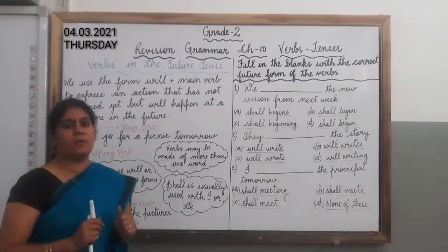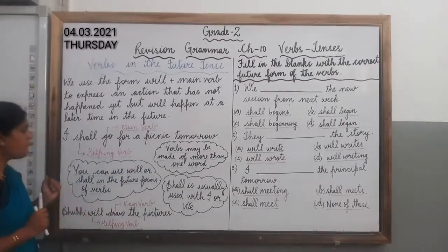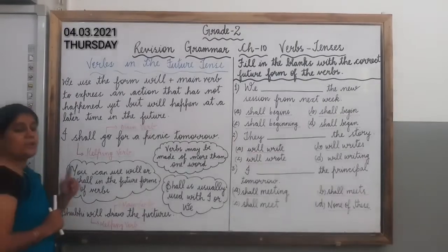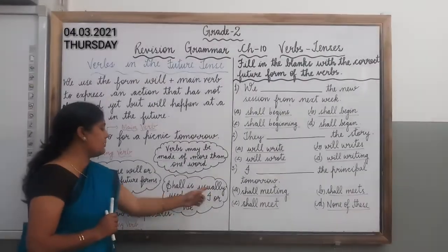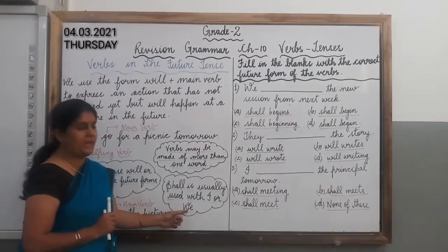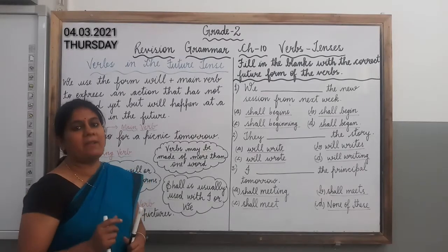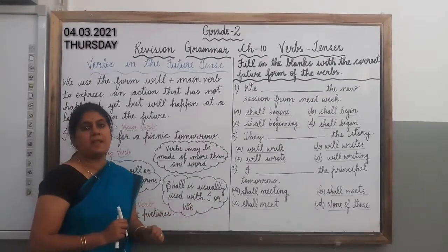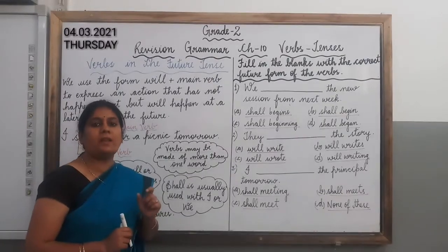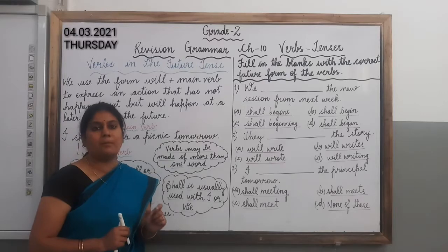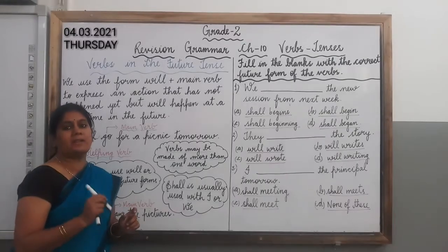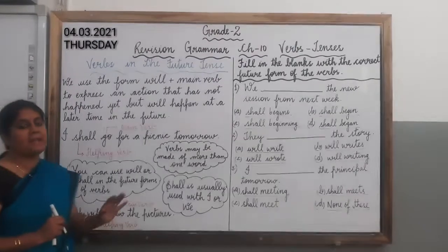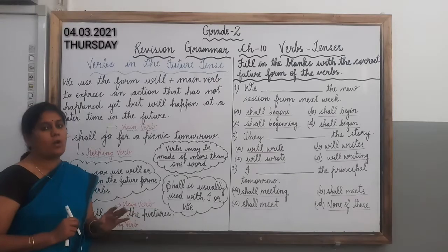Now we will learn where to use 'will' and where to use 'shall'. You can use 'will' or 'shall' in the future form of verbs. You have to remember that 'shall' is usually used with the pronoun 'I' or 'we'. We will use the helping verb 'shall' before the main verb when talking about the pronoun 'I' or 'we'. The main verb remains as it is — it will not change.